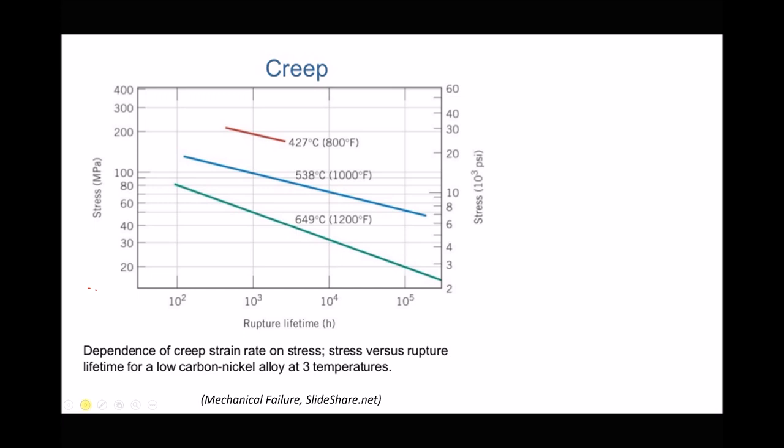Now we also looked at some examples of creep. And one of the important things that we noticed when we discussed creep was the impact that temperature can have on the time to rupture. Now all of the lines on this graph represent the same material, low carbon nickel alloy, but the big difference here is that the temperature at each line differs.